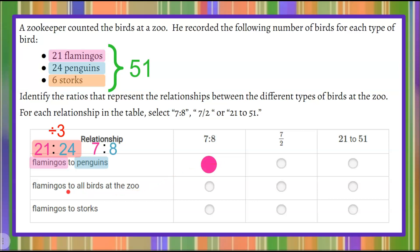Now let's talk about flamingos to all the birds at the zoo. So I know there's, again, we have 21 flamingos, and the total number of birds at the zoo is 51. 21 to 51 is in simplest form because 51 is prime, and I can see that that is this answer choice.